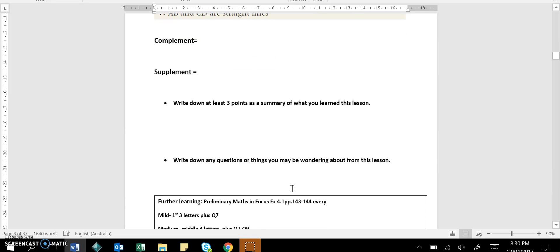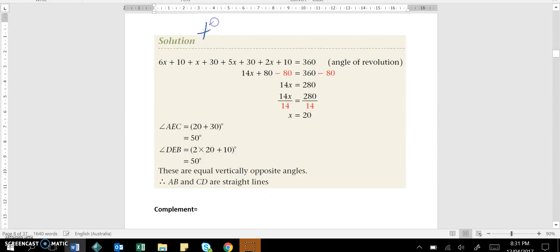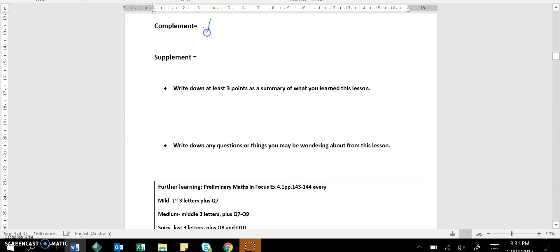The last two bits in this section are looking at some definitions. So we want to be able to write down the definition of the word complement. Complement simply means, is basically the angle that's needed to make a total of 90 degrees. So what we'll write down is the remaining amount that adds to 90 degrees. So for example, if you were given 60 degrees, the complement would be 30 degrees.